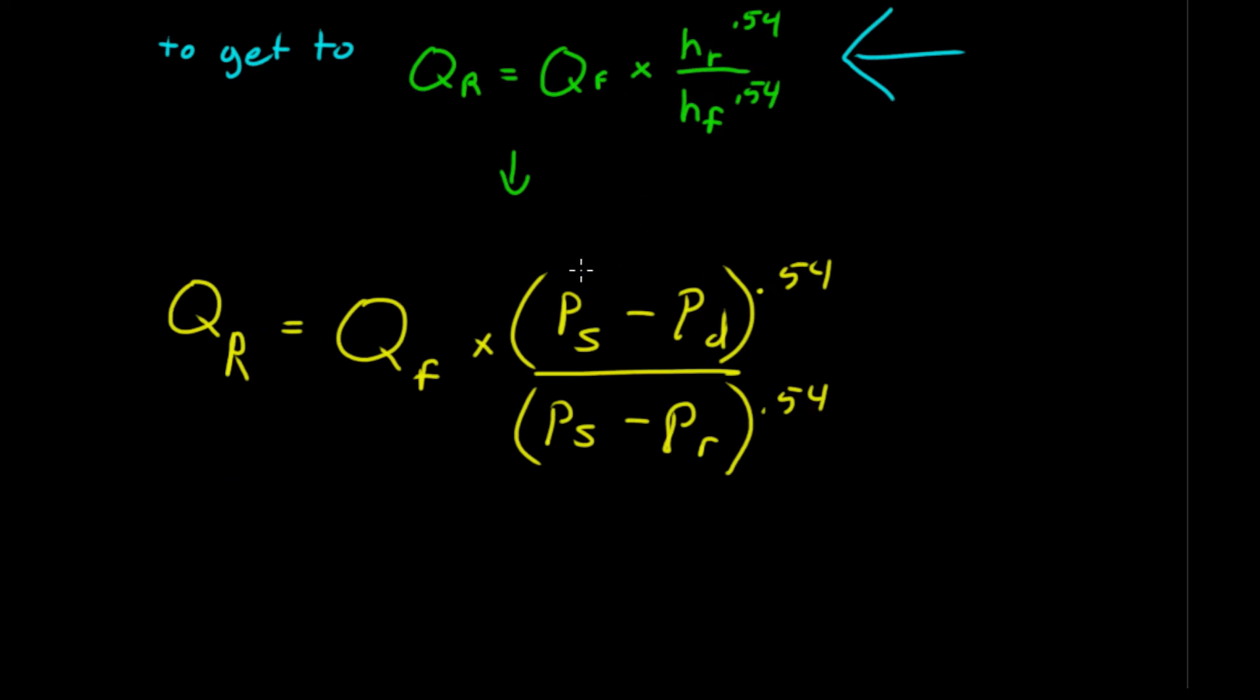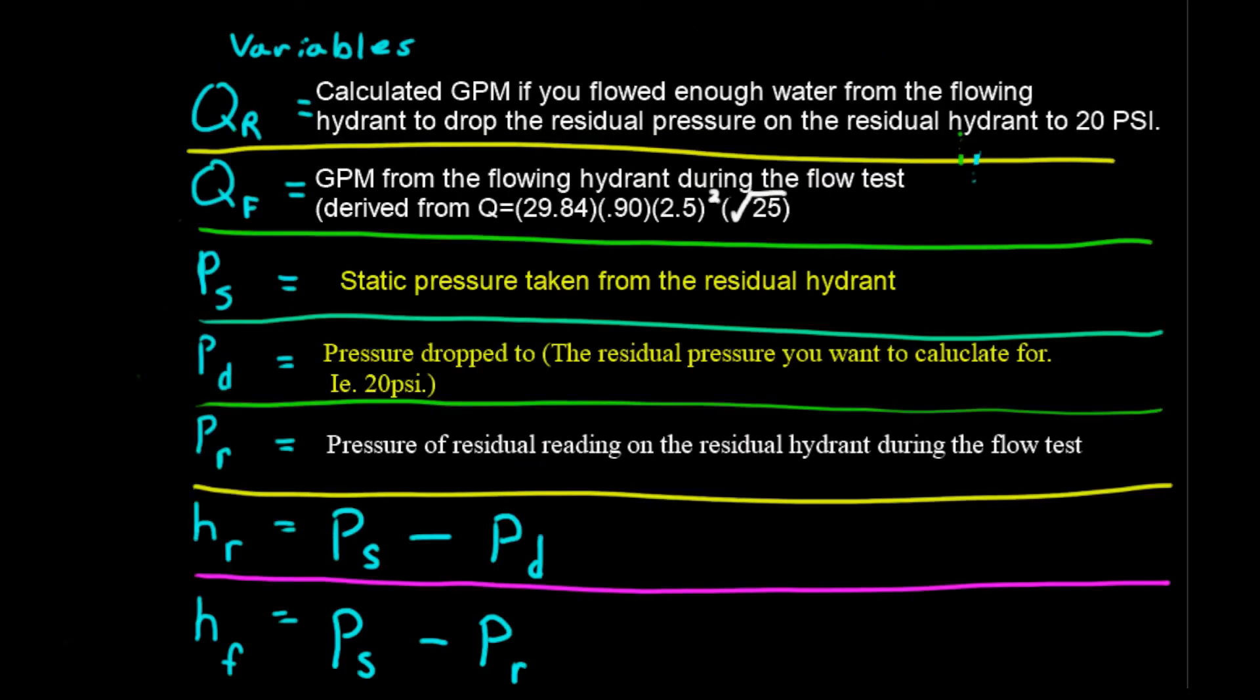So, I've rewritten this equation. That was our static pressure, residual pressure. That's our desired residual pressure. Like the PD would be like the 20 PSI we're shooting for on residual pressure. Once again, here are the variables. What they mean.